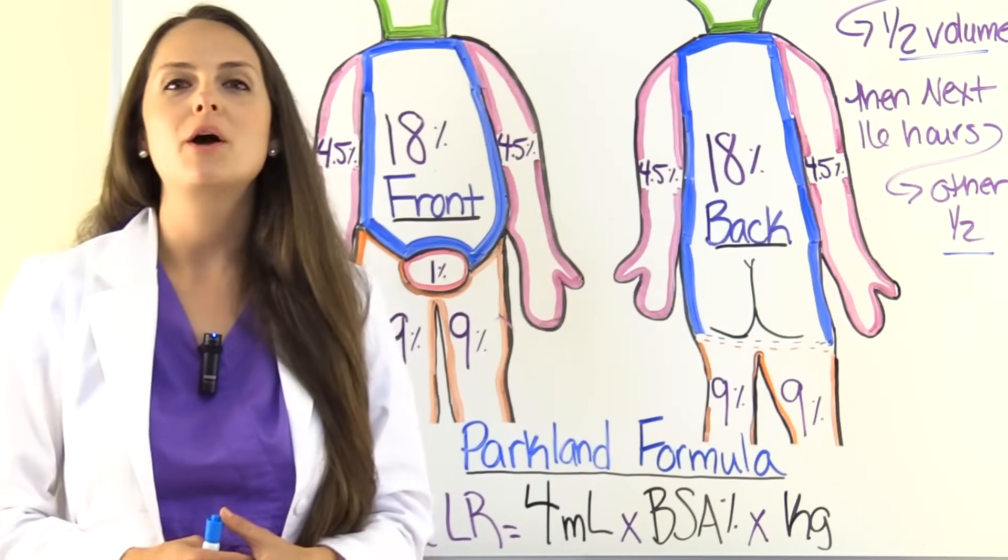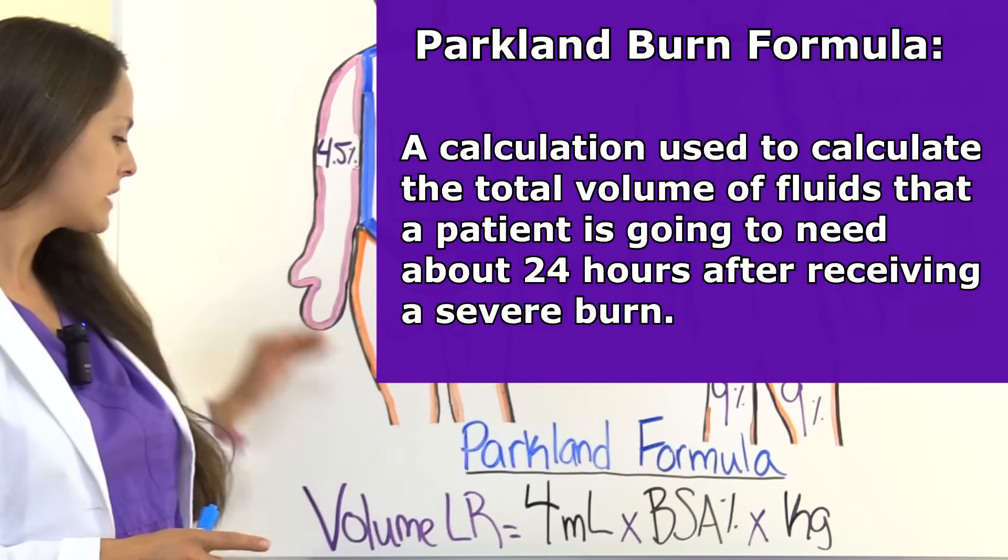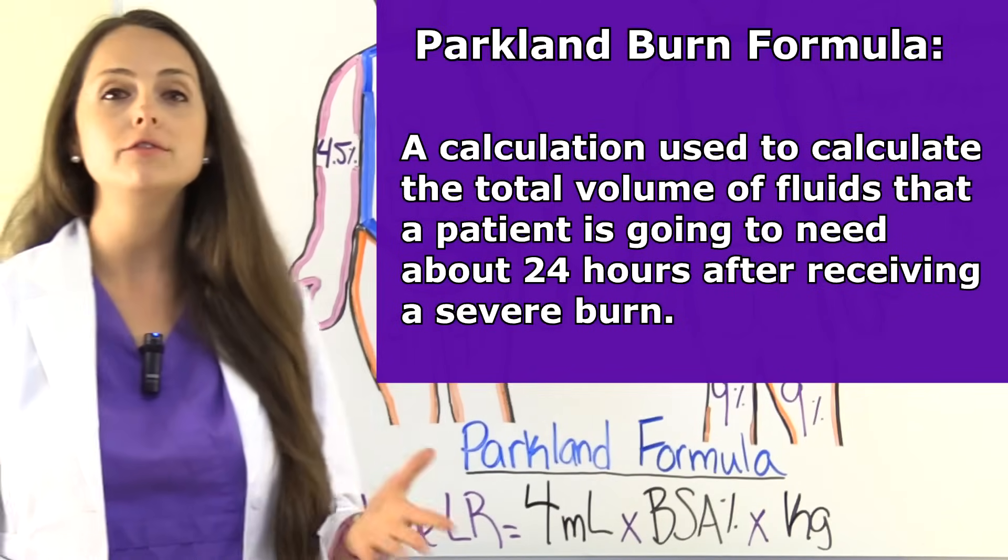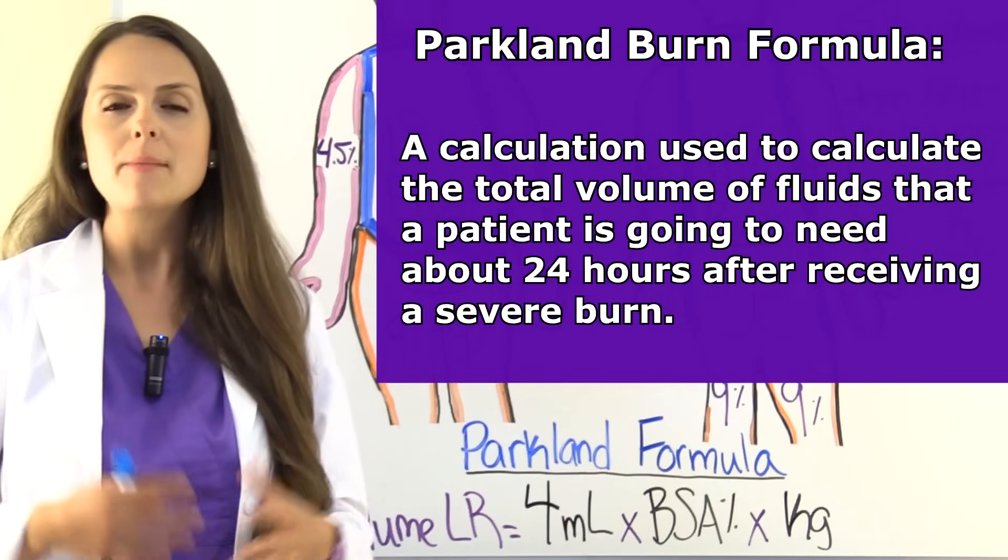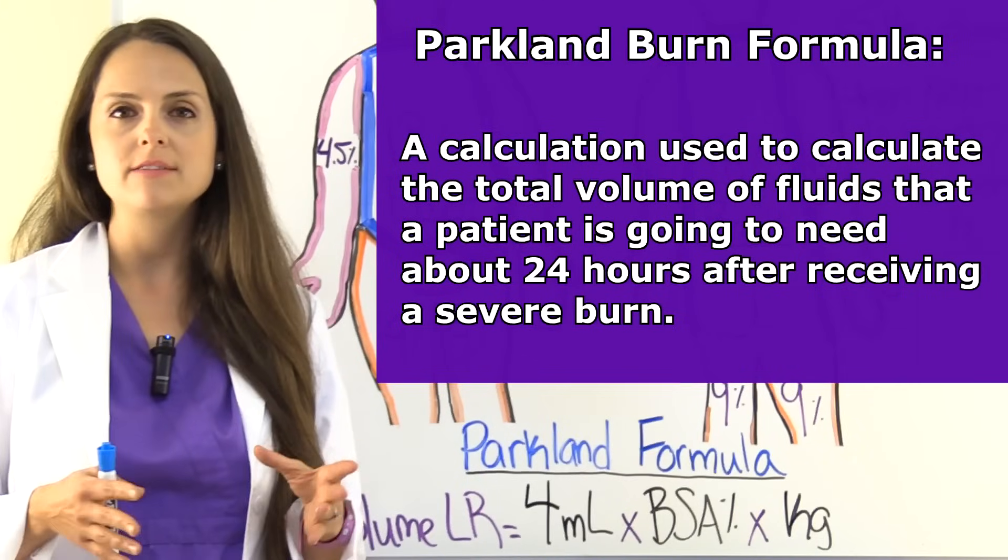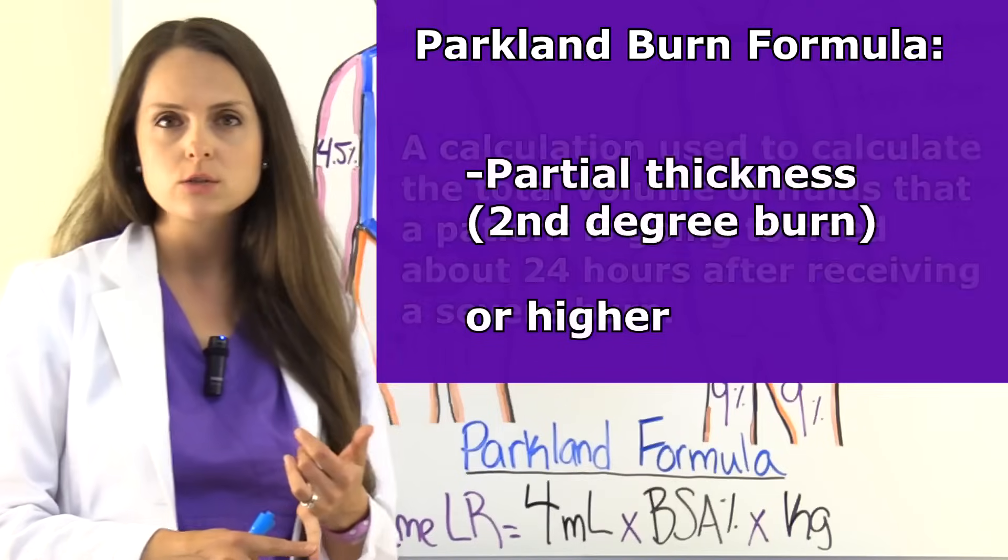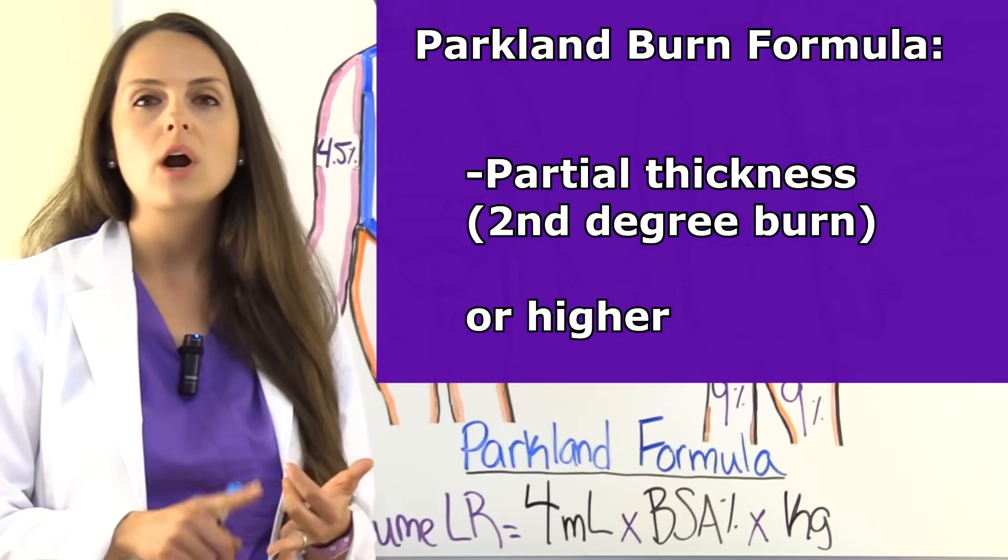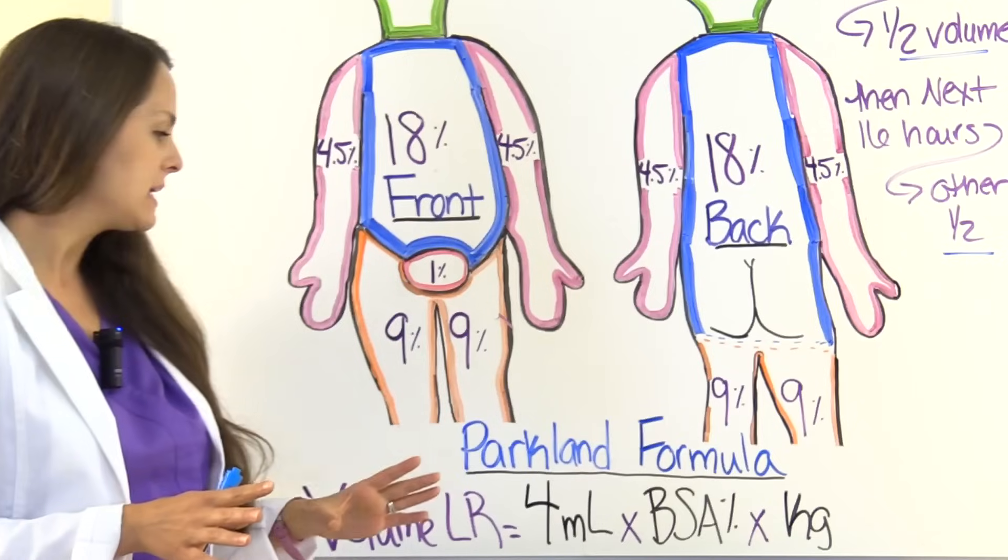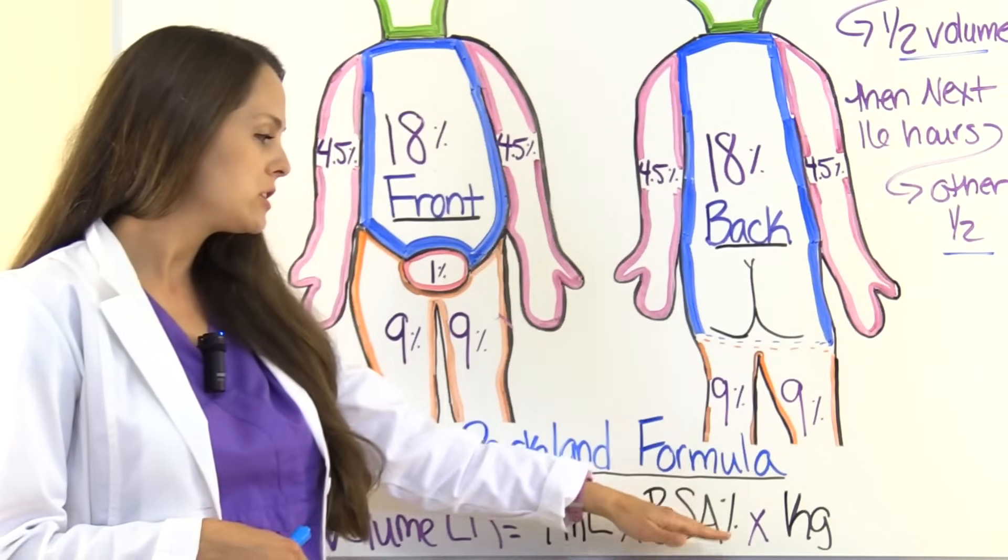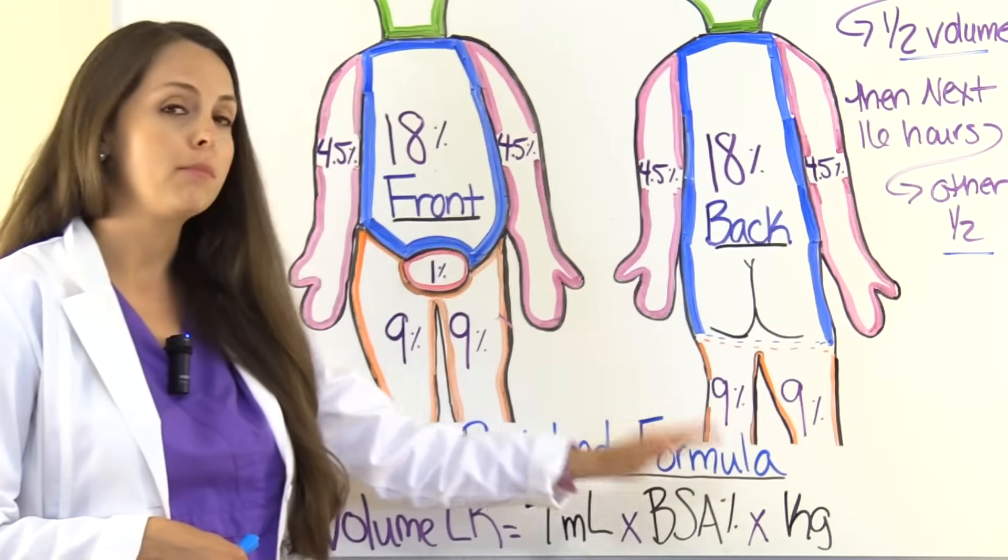What is the Parkland Burn Formula? It's a calculation used to calculate the total volume of fluids that a patient's going to need about 24 hours after receiving some type of severe burn. Usually we're talking about partial thickness, which is the second degree burn, or higher. And what it takes into account is the patient's percentage of body surface area that is burned.